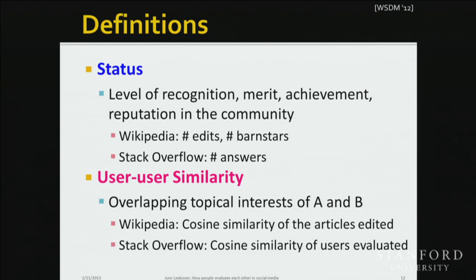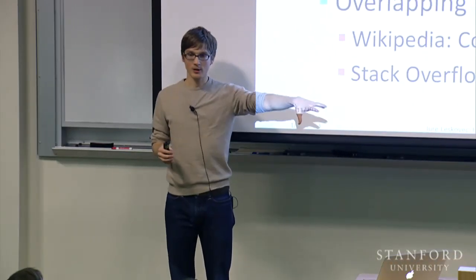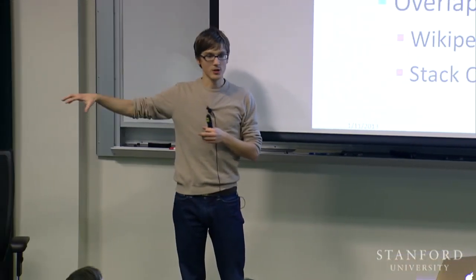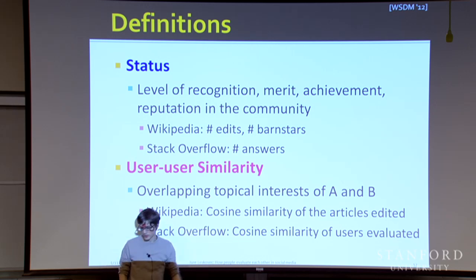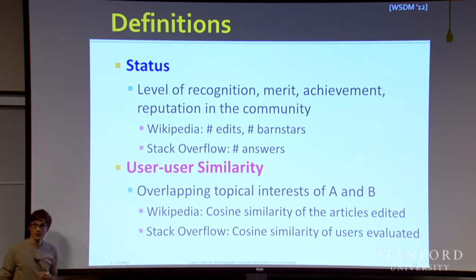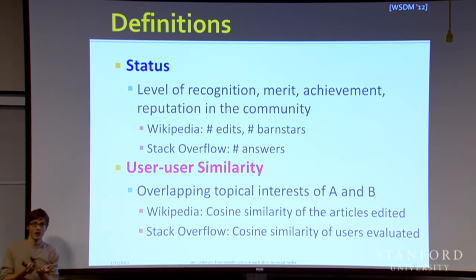What about similarity? Similarity is user-to-user similarity capturing topical interest overlap between users A and B. In practice, we compute cosine similarity of the vector of articles two people edited on Wikipedia. If we edited lots of articles in common, our similarity is high; if you edit political articles and I edit history articles, our similarity will be low. On Stack Overflow, we used cosine similarity over the users that evaluated your contributions.